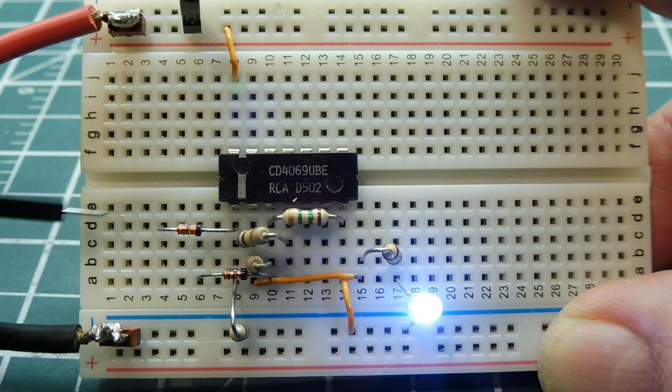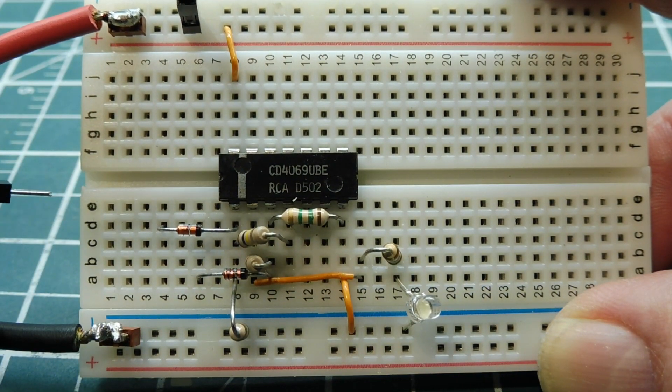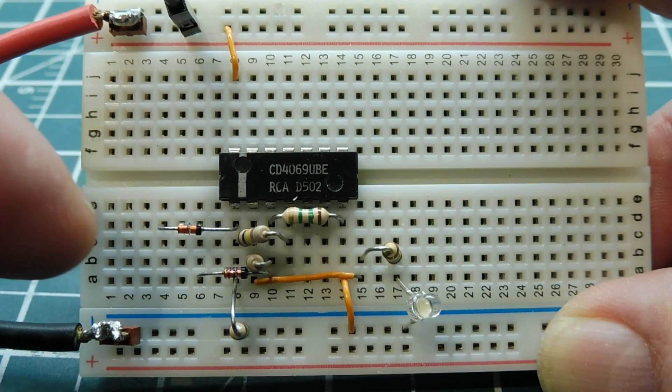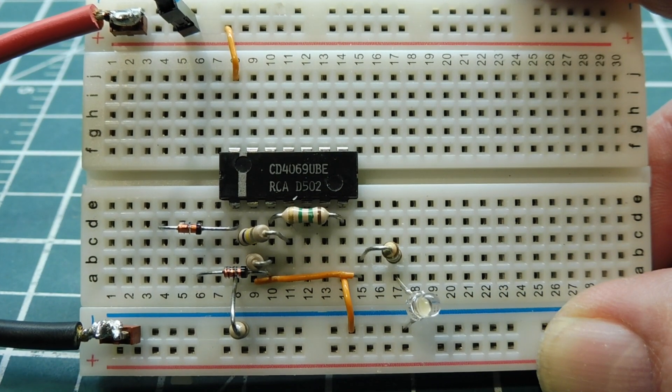Now if we want to make a negative going trigger SR flip-flop, all we have to do is reverse the two diodes and change the pull-down resistors to pull-up resistors.